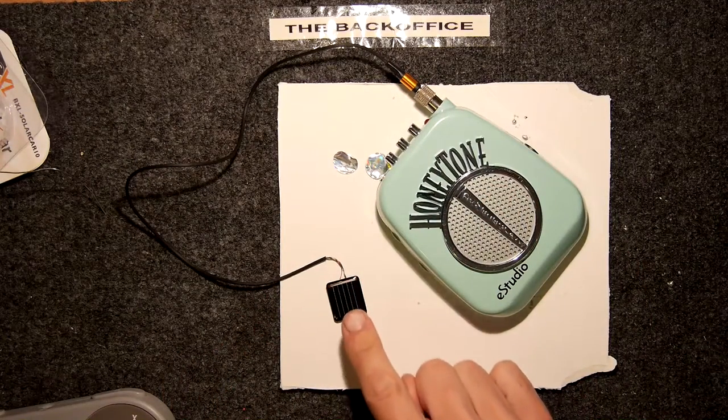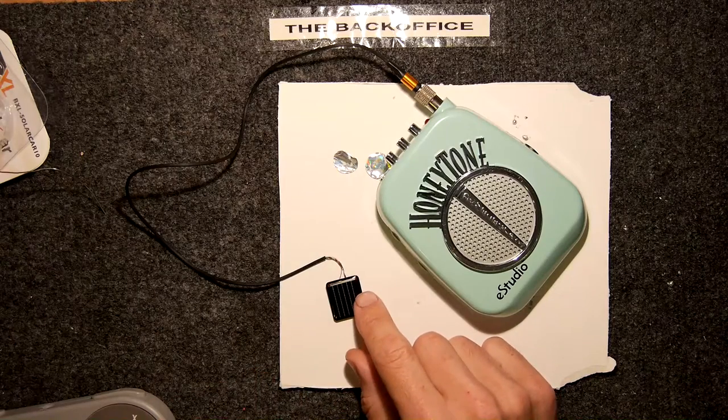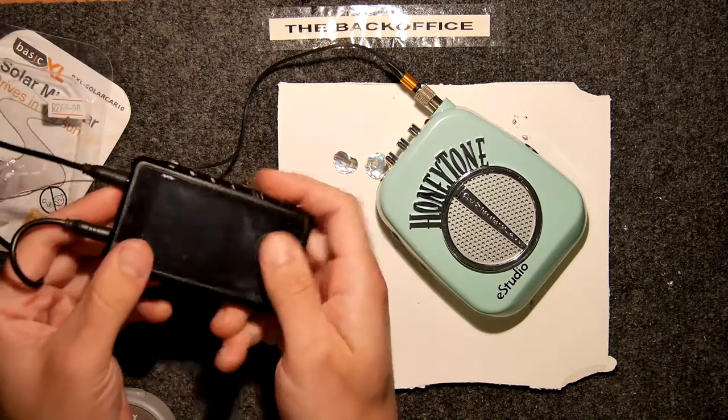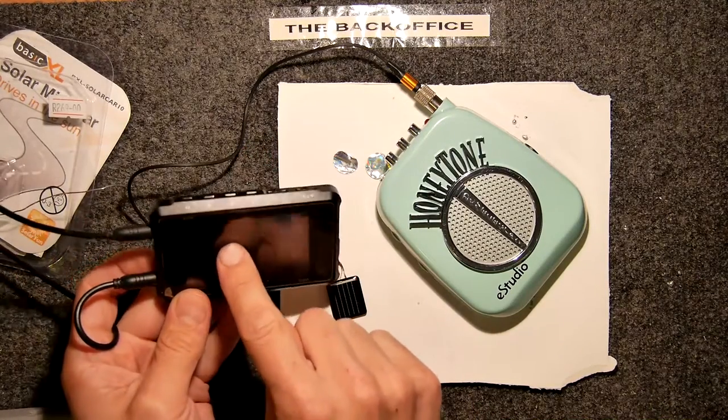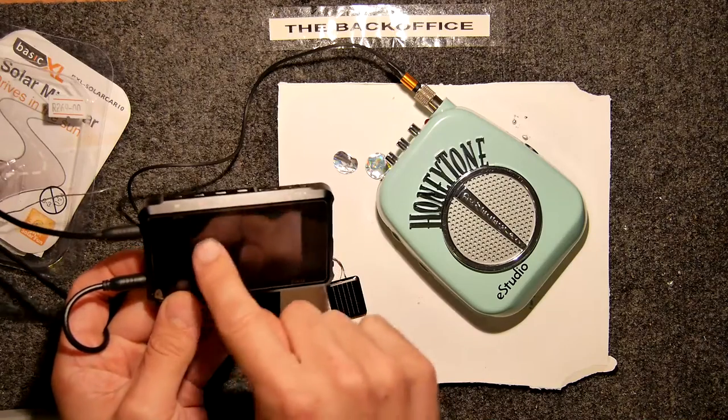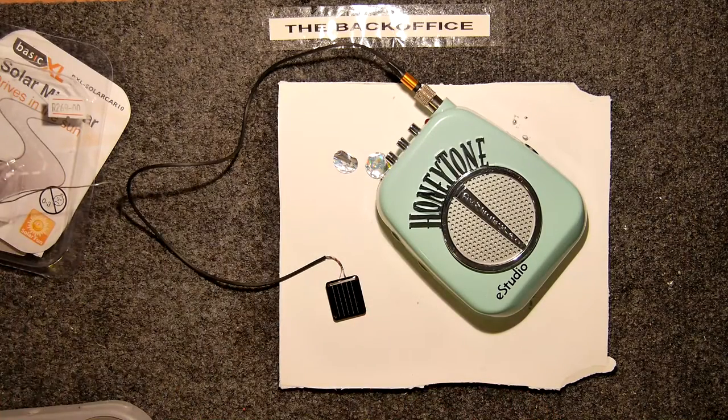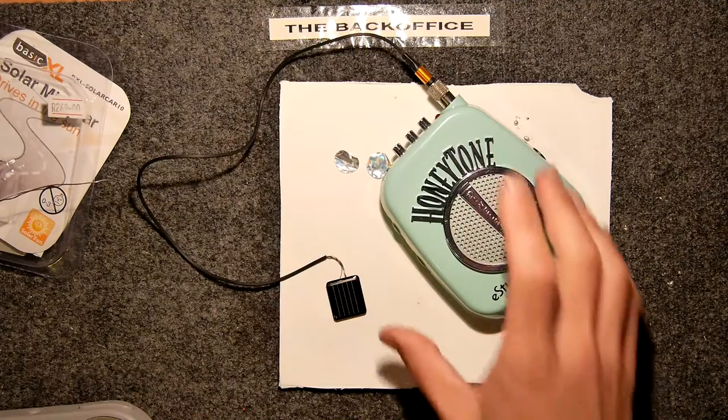If we actually had an oscilloscope, and unfortunately mine's out of battery at the moment so I'm not going to set it up, but you would see on the oscilloscope a 60 Hertz or 50 Hertz, depending on where you are, sine wave coming through. That's fine though, that won't affect too much what we want to do.